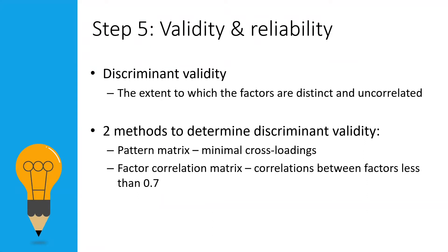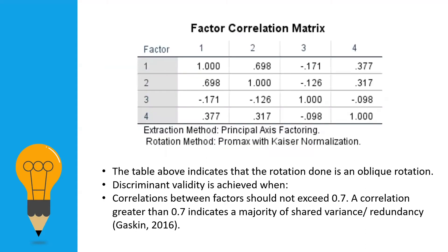Two strategies can be used to assess discriminant validity. The first method is to examine your pattern matrix or rotated component matrix. There should be minimal cross-loadings, meaning that an item desirably loads on a single factor instead of loading on several factors at the same time. The alternative is to check the factor correlation matrix. The correlations between the factors should be less than 0.7. If correlations among the factors are high, then you will be facing a multicollinearity issue. To avoid this, you might want to remove the problematic items or improve the wording of certain items to prevent confusion.